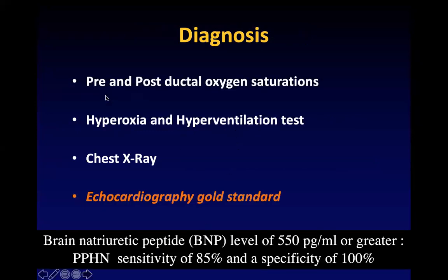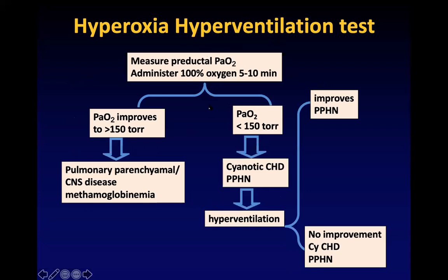Diagnosis of PPHN is made clinically by looking at pre- and post-ductal saturation difference of more than 5 percent, by doing a hyperoxia-hyperventilation test, and by X-ray. The gold standard for making a diagnosis of PPHN is echocardiography, which is done before starting specific treatment to rule out heart disease. One molecule used in diagnosis is BNP — levels more than 550 picogram per mL have a sensitivity of 85 percent and specificity of 100 percent for PPHN.